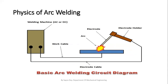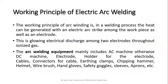An arc is a sustained electric discharge through the ionized gas column — plasma — between two electrodes. In order to produce the arc, the potential difference between the two electrodes should be sufficient to allow current to move across the air gap. A larger air gap requires a higher potential difference. If the air gap becomes too large, the arc may be extinguished. So we have to maintain a specific gap between the electrode and the workpiece.